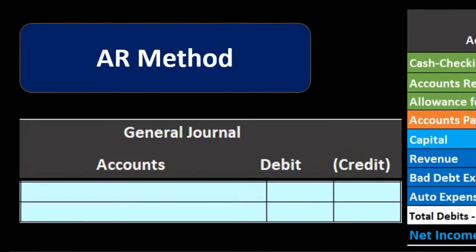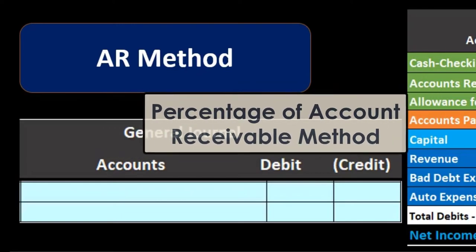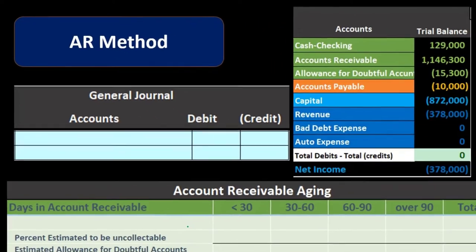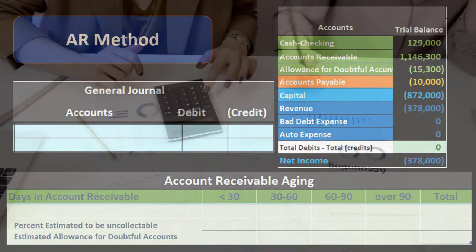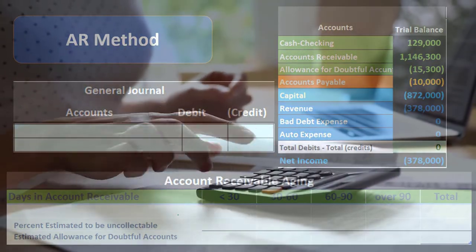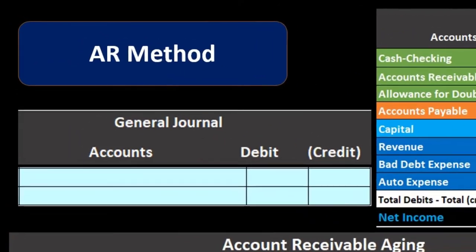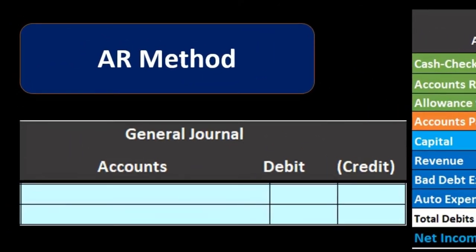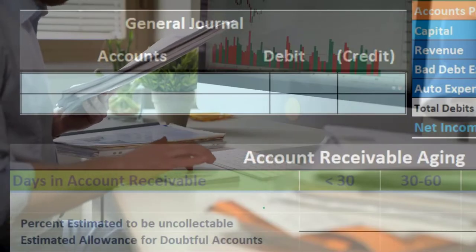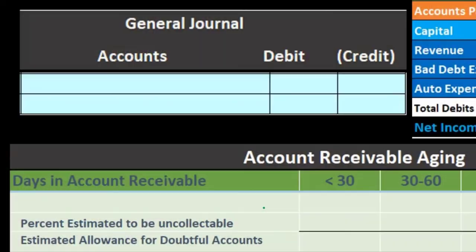We're going to start with the percentage of accounts receivable method for a few reasons. First, it's the one most often tested. Second, it's most often used in practice and tends to make the most sense to people comparing the two methods. It's also a bit more complicated, so test questions typically focus on this method to create a more involved calculation.